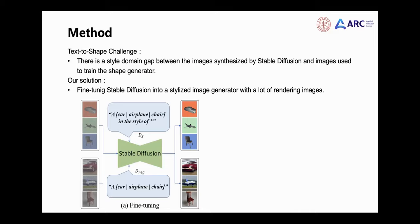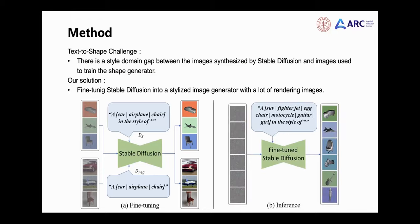At the same time, we also regularize the fine-tuning process with a large number of original stable diffusion generated images to maintain the generative ability without being destroyed. After fine-tuning, stable diffusion can stably generate rendering style images as inputs for the shape generator.